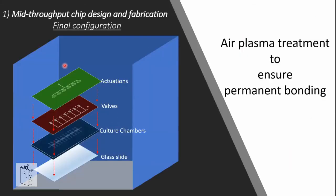In conclusion for the design part: the final configuration has three layers stacked one upon the other — actuation on top, valves in the middle, and the culture chamber at the bottom. All layers are permanently bonded together with air plasma treatment, a specific treatment that reactivates the surfaces and bonds them together indefinitely.